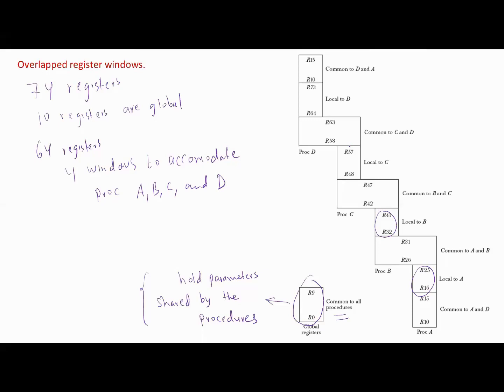Each register window consists of ten local registers. For example, this register is local for A, this local for B, this local for C, and this local for D. And we have two sets of six registers common to adjacent windows. For example, these six registers and these six registers are adjacent to C. These six and these six are adjacent to B. This set and this set is the same. They are common to A and D. Local registers are used for local variables and parameters, and common registers are used to exchange parameters and results between the adjacent procedures.